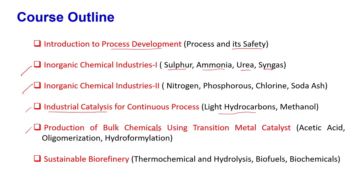Then comes the production of bulk chemicals using transition metal catalysts, primarily through homogeneous catalysis. In homogeneous catalysis you have a single phase, whereas heterogeneous means multi-phase. Catalyst recovery is very difficult in homogeneous catalysis but easier in heterogeneous. In the homogeneous catalysis module, we will study the production of acetic acid, oligomerisation examples like the SHOP process — the Shell Higher Olefin Process, which converts an olefin to a higher olefin — and hydroformylation reactions, where both hydrogen and a formyl group are added. These are the fourth and fifth modules pertaining to catalysis.